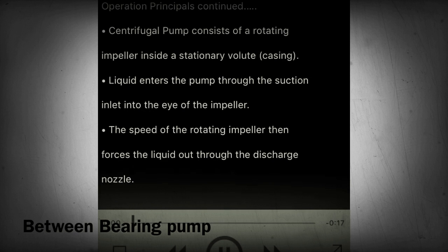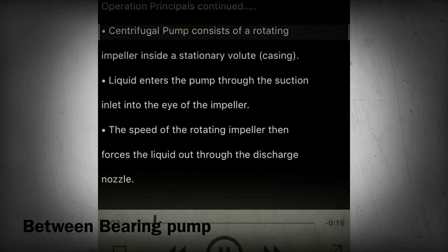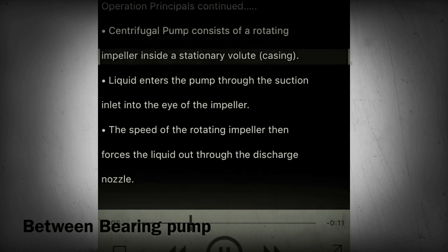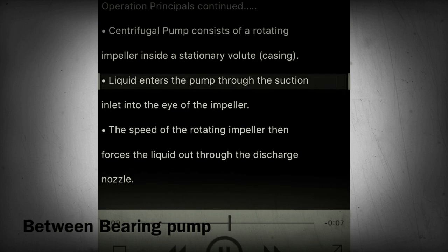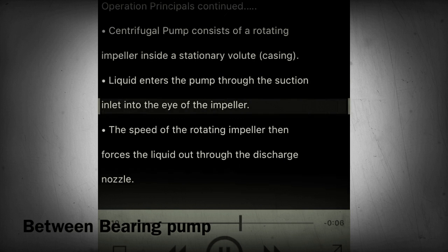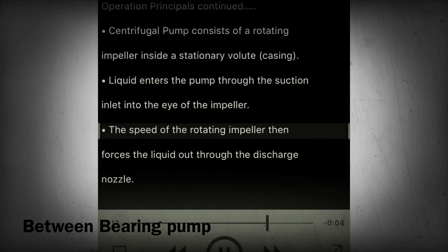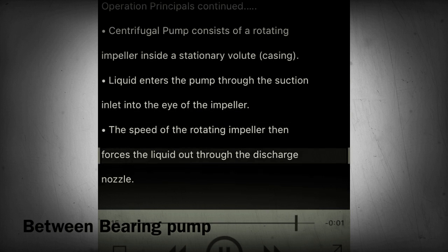Section 15 - Operating principles continued. A centrifugal pump consists of a rotating impeller inside a stationary volute casing. Liquid enters the pump through the suction inlet into the eye of the impeller. The speed of the rotating impeller then forces the liquid out through the discharge nozzle.